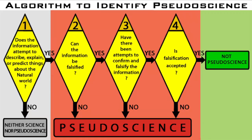Information that passes through this algorithm and is deemed not pseudoscience can be further classified as good science based on qualities such as rigor and methodology, robustness and experimental design, just to name a few.